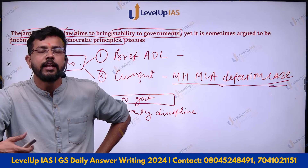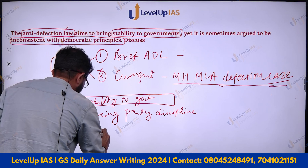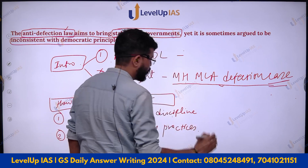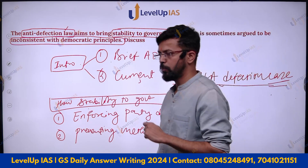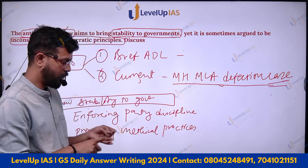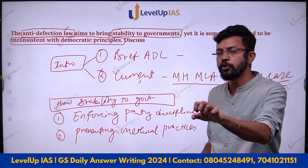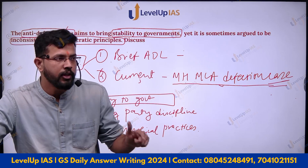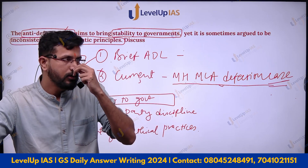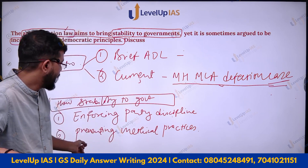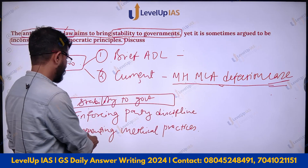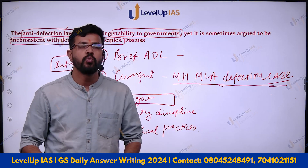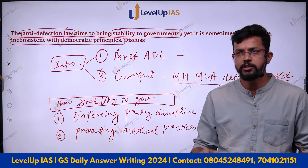The second point is preventing unethical practices. You cannot take a bribe; you cannot join another party; you cannot split from the party. There are a lot of provisions. Writing these points is very important, but you must be specific — write at least one line about what sort of practices are being prevented. Avoid open-ended statements.